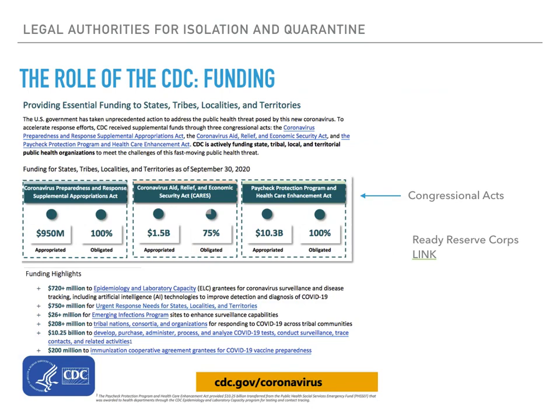This summary, published by the CDC in late September, details how the CDC received funding via three congressional acts: the Coronavirus Preparedness and Response Supplemental Appropriations Act; the Coronavirus Aid, Relief, and Economic Security Act, known as the CARES Act; and the Paycheck Protection Program and Health Care Enhancement Act. Over $750 million went to states, localities, and territories, while over $208 million went to tribal nations, consortia, and organizations. The CARES Act also provided both the authority and funding for the establishment of the Ready Reserve Corps, with the first officers commissioned in Spring 2021.